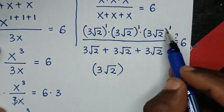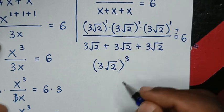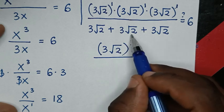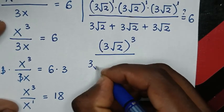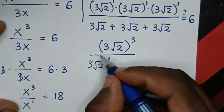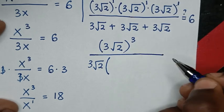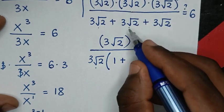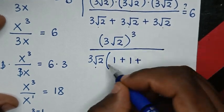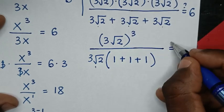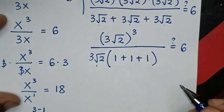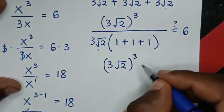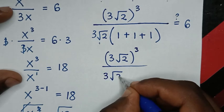We add the powers: 1 plus 1 plus 1 which is 3. From the denominator, 3 square root of 2 plus 3 square root of 2 plus 3 square root of 2 — here 3 square root of 2 is common, so we take it out of the bracket, giving 1 plus 1 plus 1, which is 3 times 3 square root of 2. So we have 3 square root of 2 bracket to the power 3 over 3 square root of 2 bracket times 3.